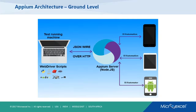Behind the scenes, Appium has access to the UIAutomation tool in the case of iOS, and the UIAutomator tool which is part of the Android SDK. Through these tools, it sends commands to the devices. That's the internal mechanism Appium uses to fire functions on the devices.